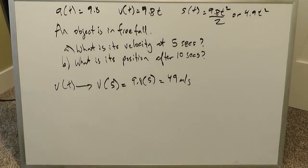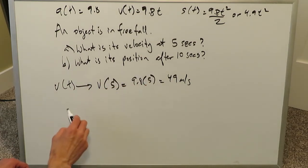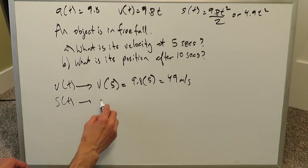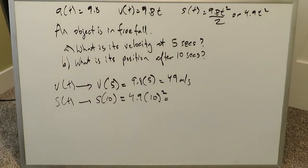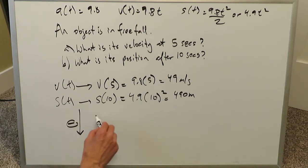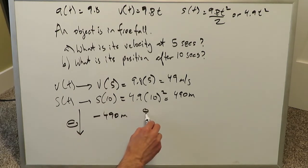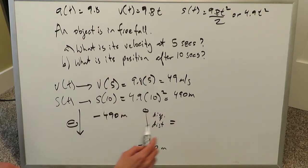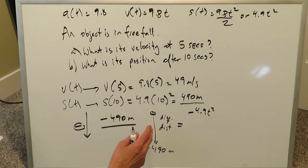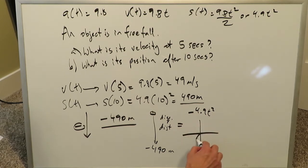An object with an initial acceleration of 9.8 meters per second squared, after five seconds of free fall, will have a velocity of 49 meters per second. Now, what is its position after 10 seconds? You look at the position function: s(t) = 4.9 × 10 squared = 490 meters. If you're really looking at free fall, you'd present the answer as −490 meters, because the object started from zero and moved downward — 490 meters down from the original point.